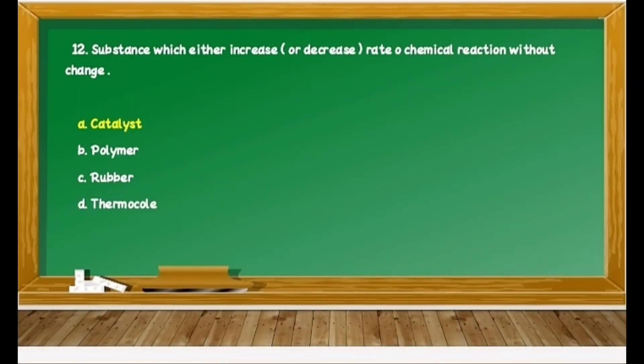From this question, the questions start on catalysis. Question 32: A substance which either increases or decreases the rate of a chemical reaction without any change — we know that this is one of the definitions of a catalyst. Therefore, option A, catalyst, is correct.